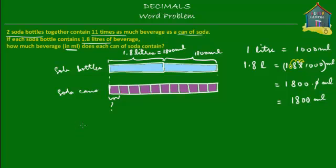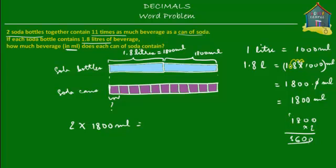How much beverage can two soda bottles contain in milliliters? Two soda bottles means 2 times 1,800 milliliters. 2 times 1,800 milliliters is equal to 3,600 milliliters. So together the two blue bottles equal 3,600 milliliters.